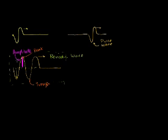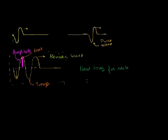The next question you might ask is, how quickly are you doing it? How long does it take to go all the way up, all the way down, and back again? How long for each cycle — a cycle is going up, down, and back again. How long for each period? Each period is each repetition of the wave. This idea of how long for each cycle is called the period, and it's a unit of time.